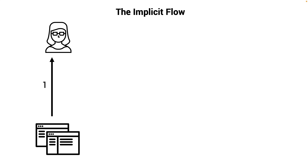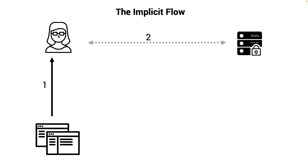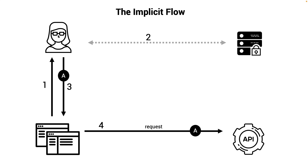Now let's talk about implicit flow. This is typically implemented on a website or single page application. The user clicks, goes to the authorization server, sees the consent screen, and gets back an access token right away. The key difference is there is no validation step in between — you receive the access token directly with implicit flow, which makes it less secure.